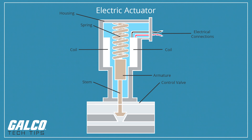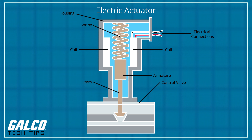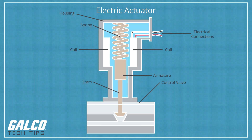An electric actuator is powered by a motor that converts electrical energy into mechanical torque. The electrical energy is used to actuate equipment such as multi-turn valves.